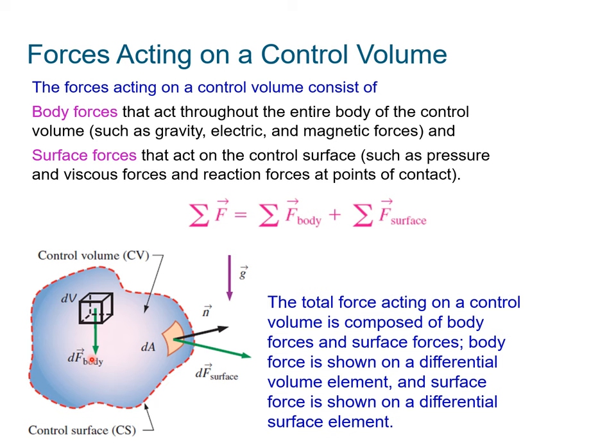So in breaking up Newton's second law, we have to consider some of the forces on the body as well as some of the sources on the surface. These body forces act throughout the entire body of the control volume. These are things such as gravity, electric forces, magnetic fields. The surface forces act on the control surface itself. These are pressure and viscous forces and reaction forces that push on the control surface. So the total forces is going to be the sum of those two forces.